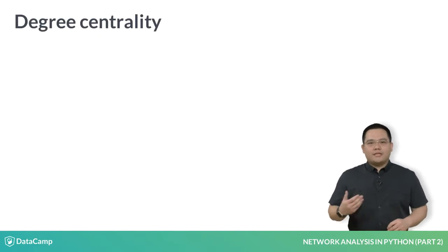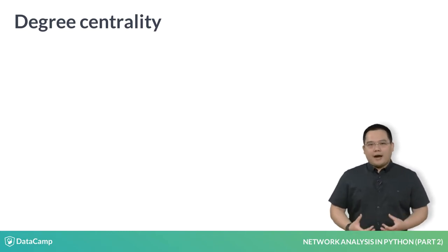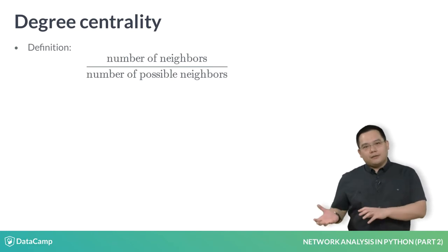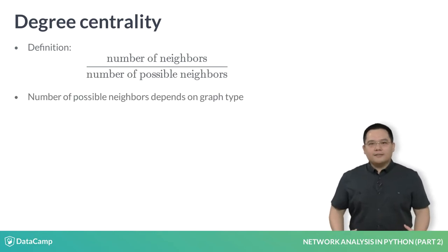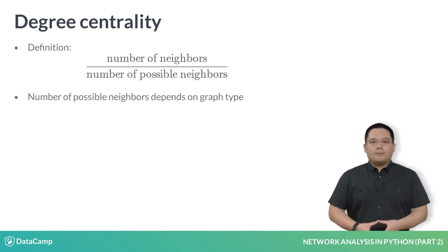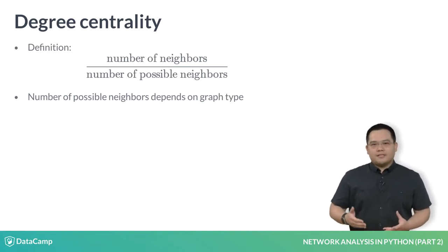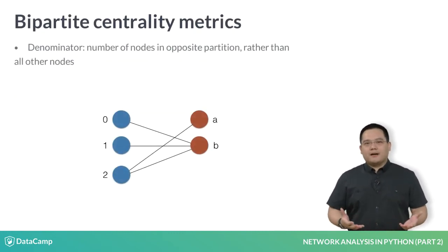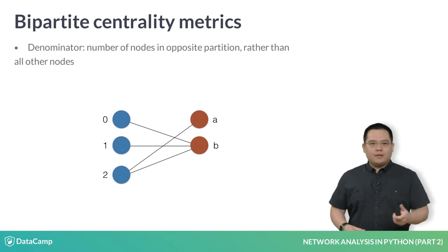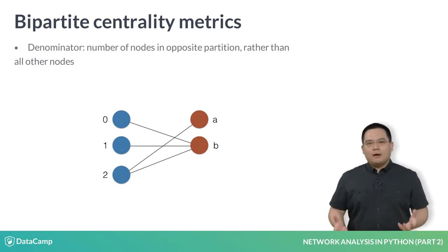Let's recall the definition of the degree centrality metric, which is a measure of node importance. For any graph, the degree centrality of a node is defined as the number of neighbors in the graph divided by the number of possible neighbors it could have. In a bipartite graph, the denominator is the number of nodes present in the other partition. Let's look at this visually. For node 2 in the graph, it's connected to nodes A and B. The number of neighbors it has is 2, and the total number of neighbors it could possibly be connected to is also 2. Thus, it has a degree centrality metric of 1.0.